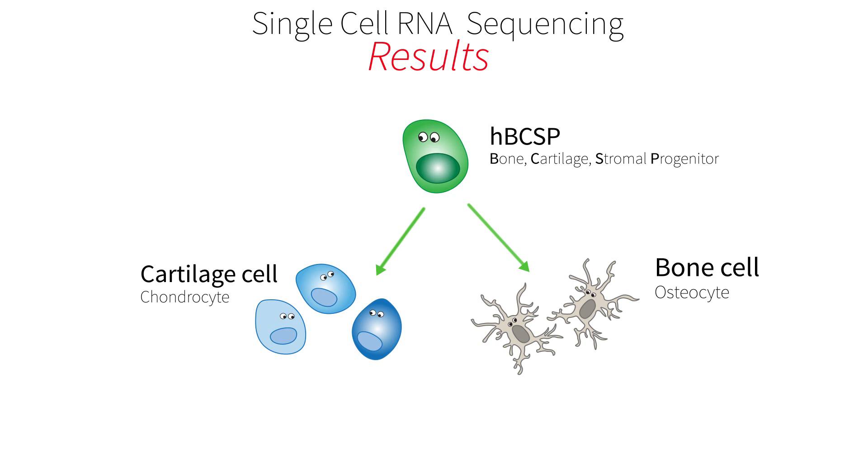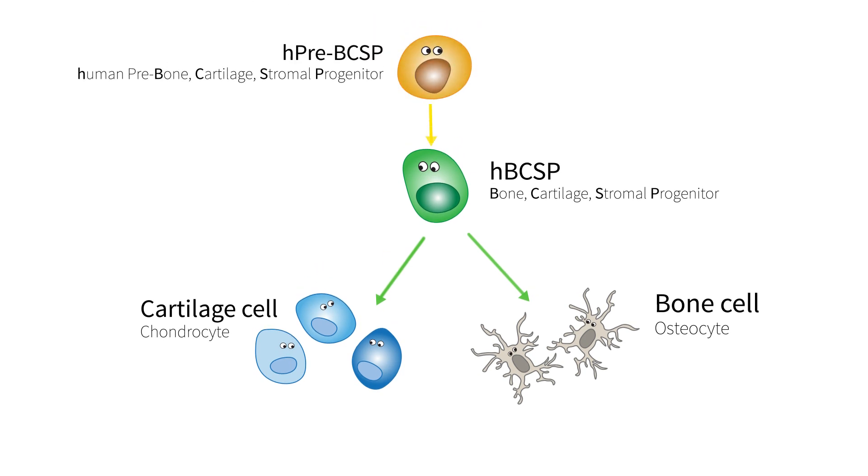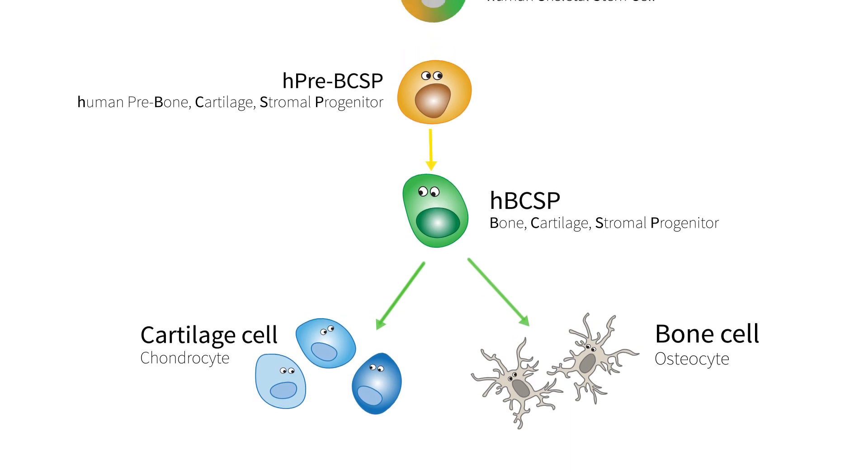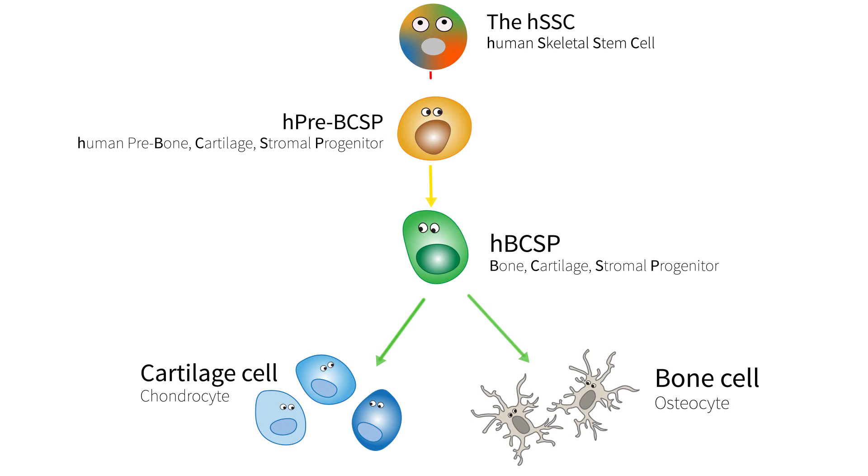Okay, so what about the ancestor of the BCSP? The BCSP comes from the pre-BCSP. So I guess the pre-BCSP comes from the pre-pre-BCSP? No, the pre-BCSP comes from the human skeletal stem cell. The human skeletal stem cell, our great-great-great grandparent, the cell responsible for generating the entire skeleton as well as other skeletal stem cells.